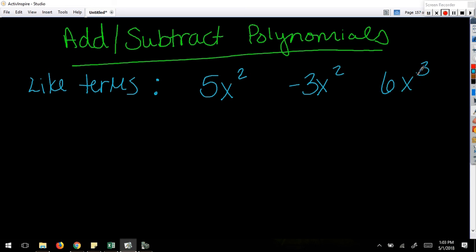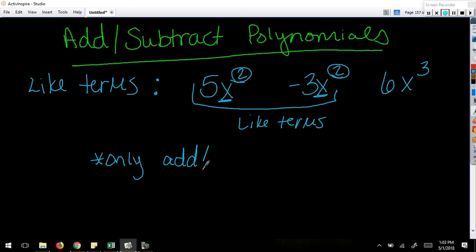The base that the exponent is hooked to, as well as the exponent itself, are the same. If that is true, then you have what we call like terms. It's important to understand with polynomials that we can only add like terms, or we can only add or subtract. We can only combine like terms.